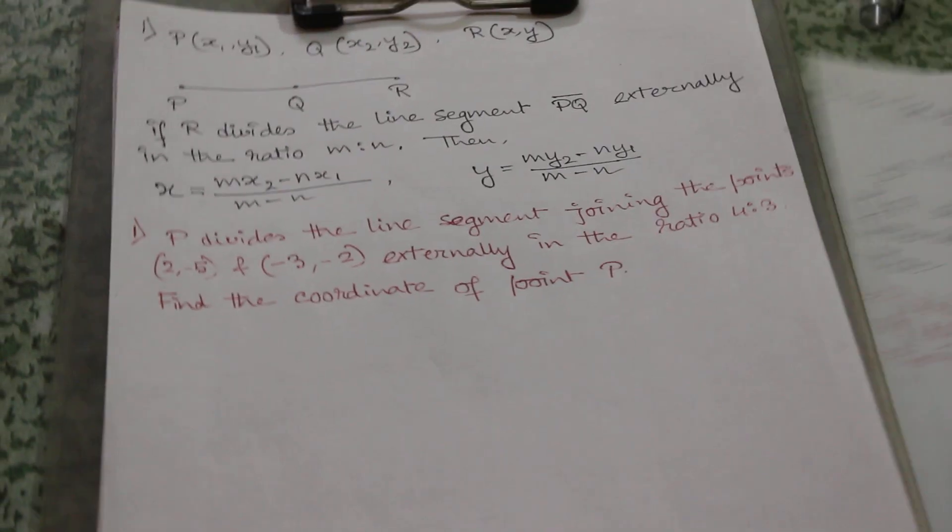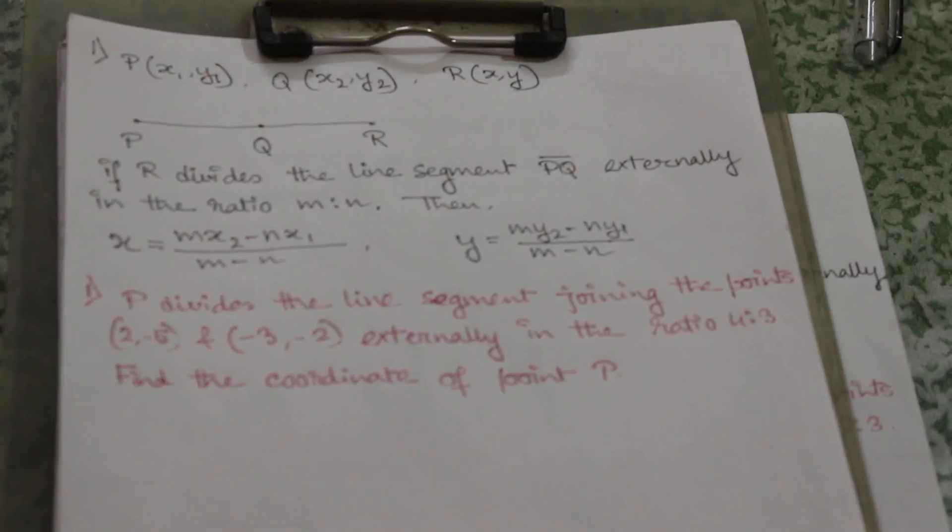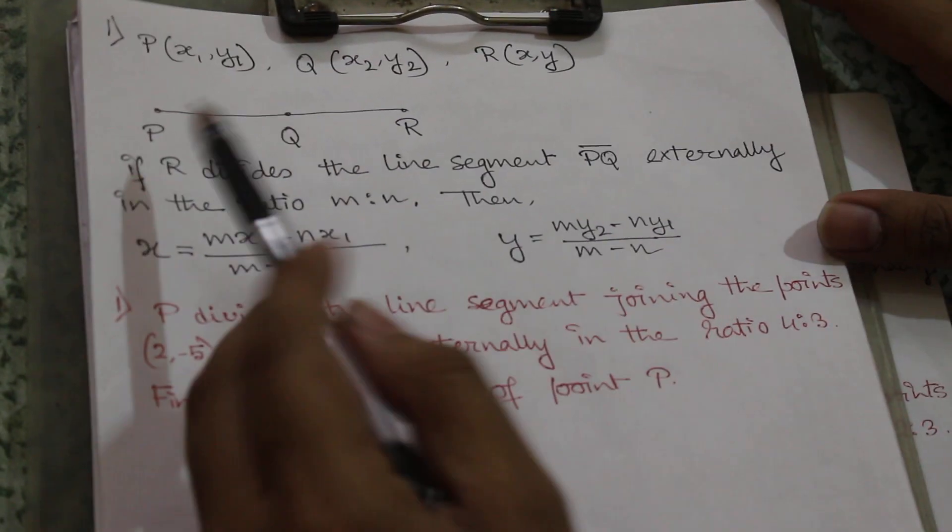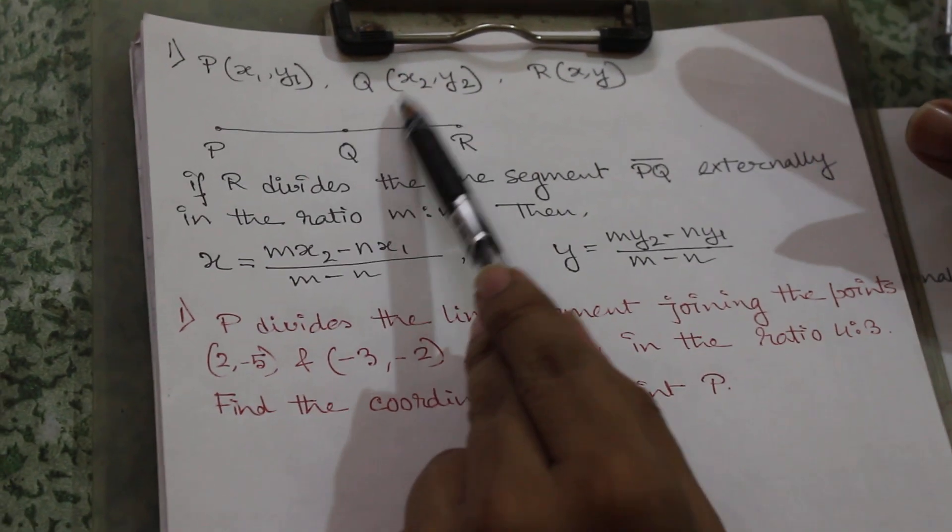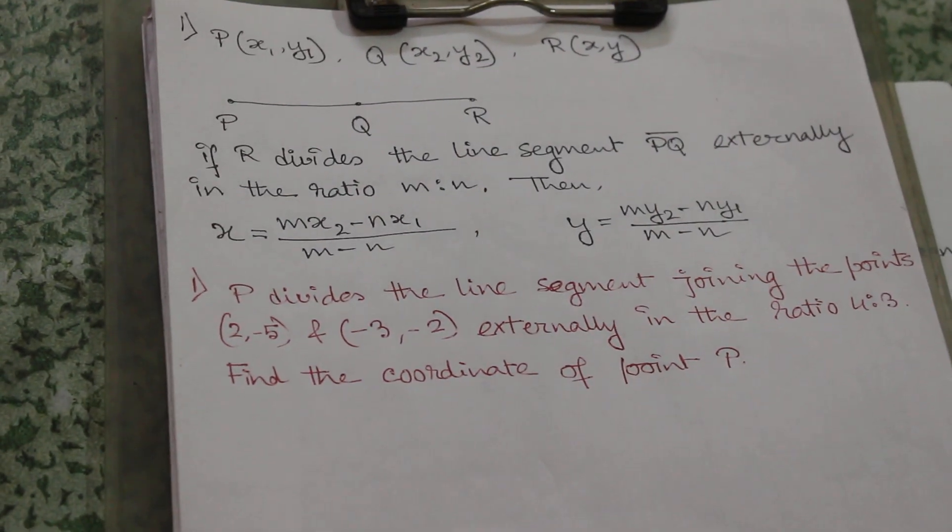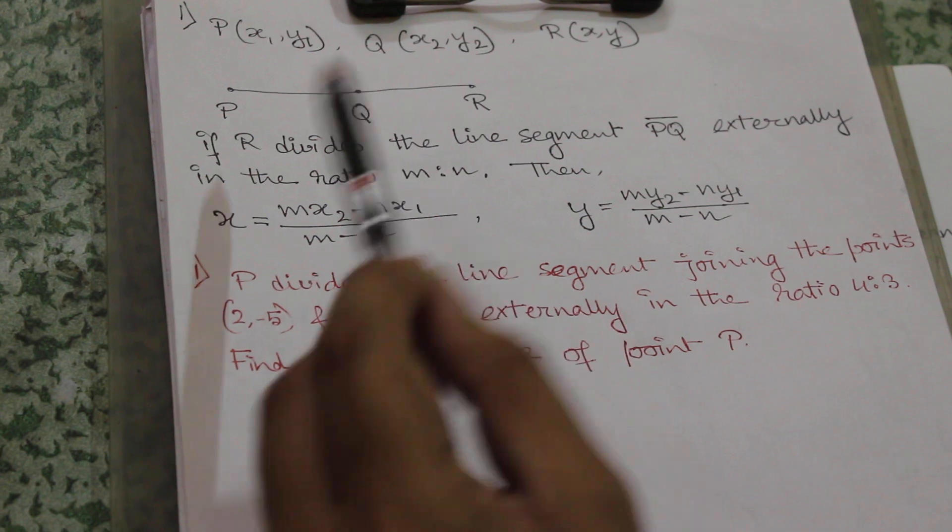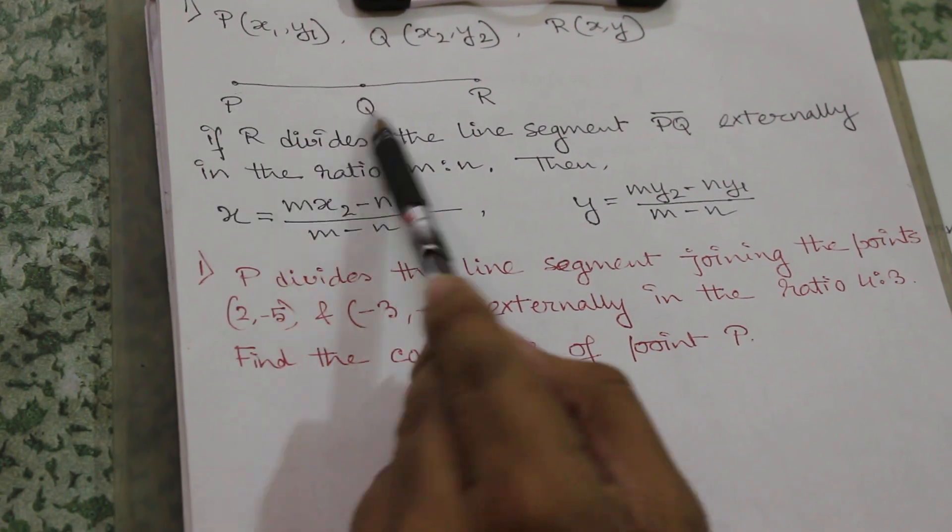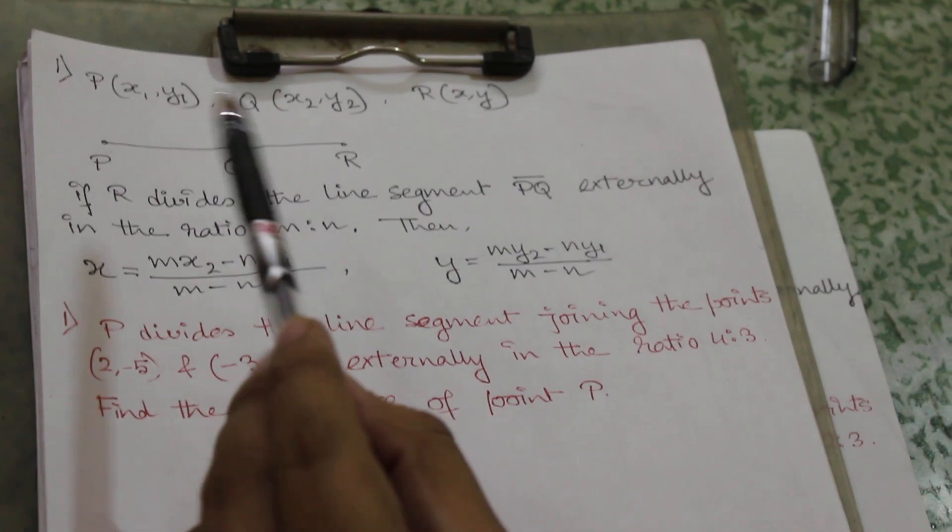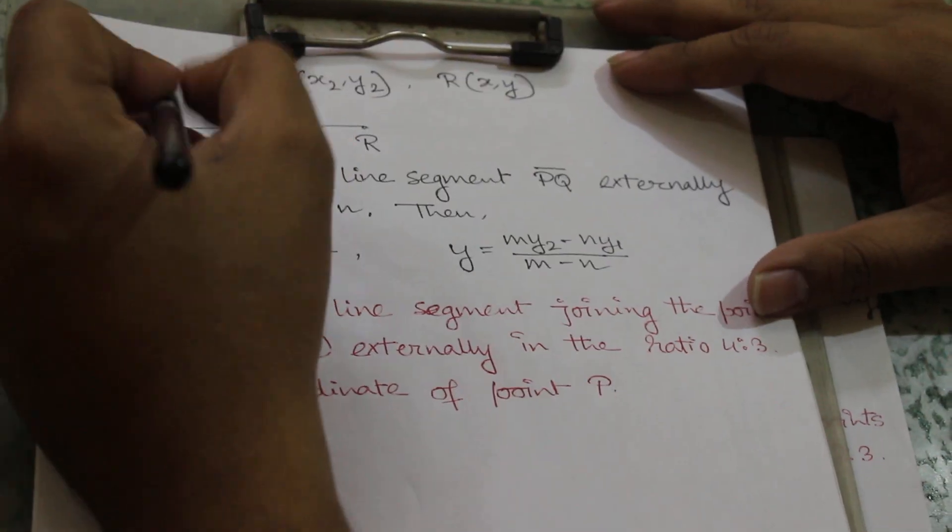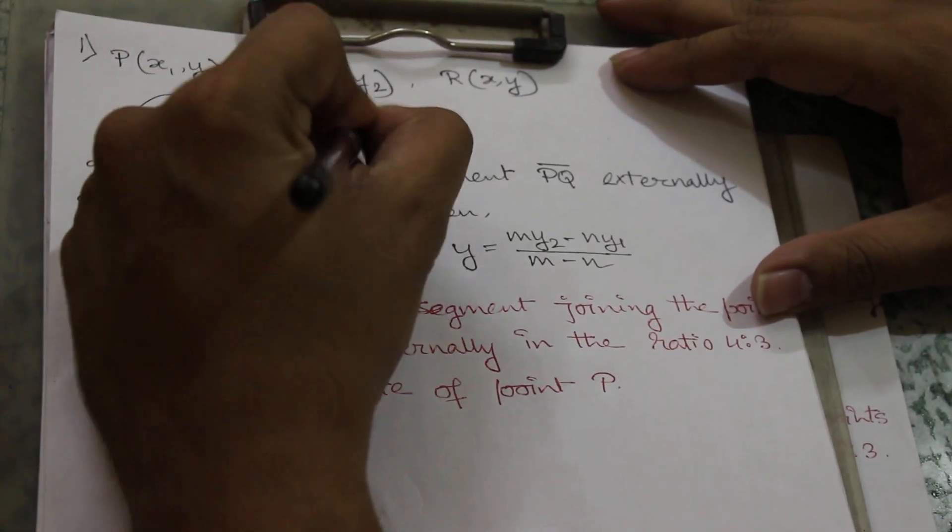Next we will discuss how a point divides externally. Let there are three points: P(x1,y1), Q(x2,y2), and R(x,y) which divides externally. The line joining is PQ and R lies outside the line joining, so the ratio is m:n. PR will be equal to m and QR will be equal to n.